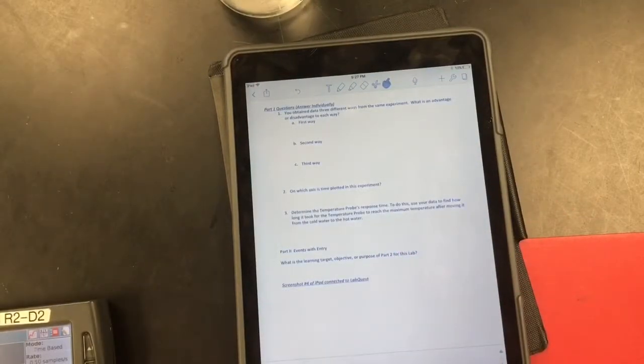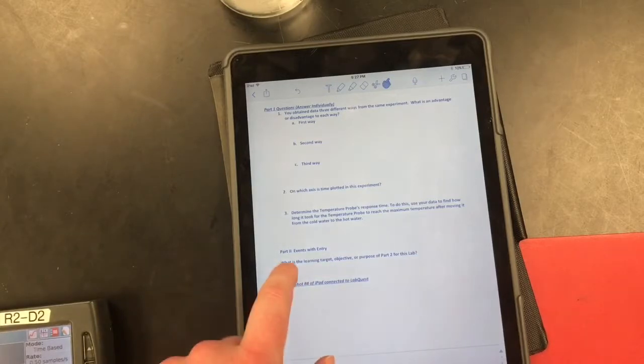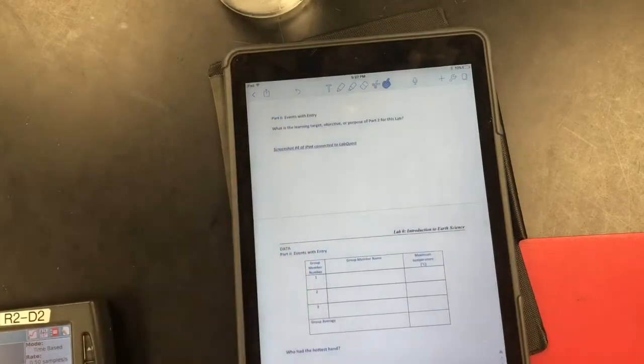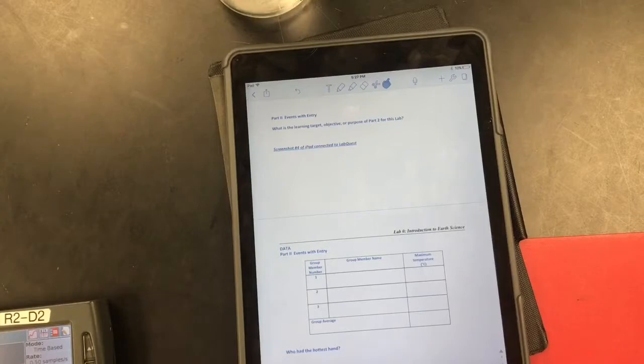For these part one questions, I'm going to let you do these on your own. So for the majority of these labs, I'm going to walk you through the entire procedure, maybe with a little bit less hand-holding than we had in this one. And then I'm going to leave you on your own to answer the questions. Please make sure to come up to me. I'll be going around the classroom. But if you have any questions on these questions, come ask. We're going to go to part two, events with entry, which is pretty similar to what we were doing in part one, but with a different mode. We're not going to be using that time-based mode anymore. We're going to be using events with entry.